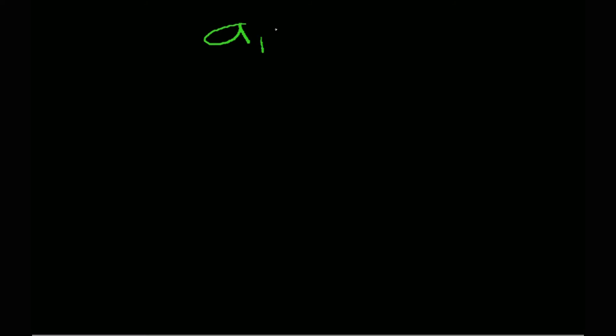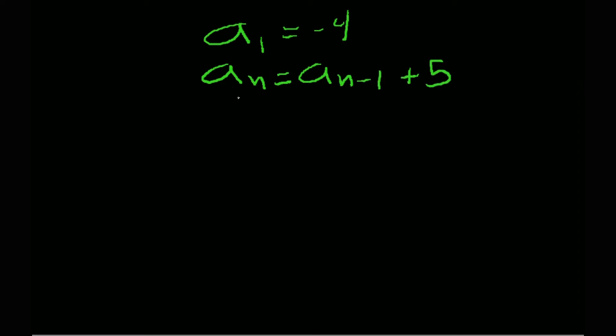In this example, our starting value is going to be negative 4. So a sub 1 is negative 4, and our recursive formula is going to be a sub n equals a sub n minus 1 — the preceding term — plus 5. We're going to find the first four terms of the sequence.